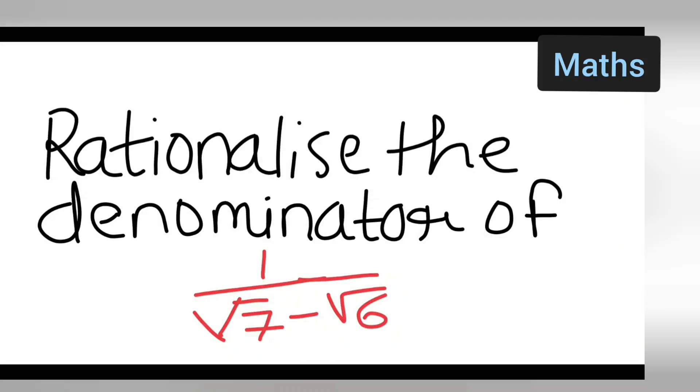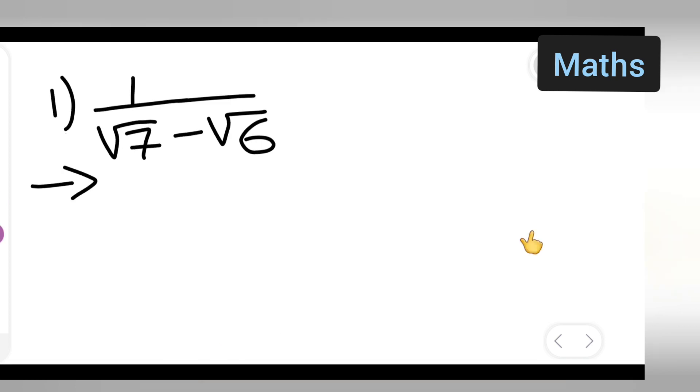In today's class of mathematics, let us see how to rationalize the denominator of 1 upon root 7 minus root 6. You all can take down the question first: 1 upon root 7 minus root 6.